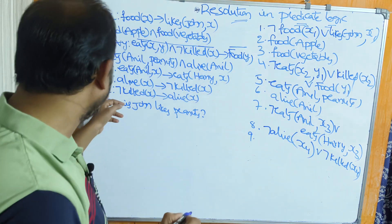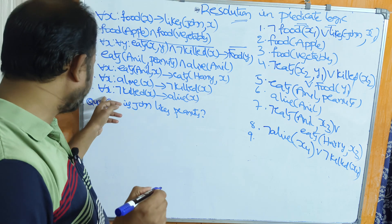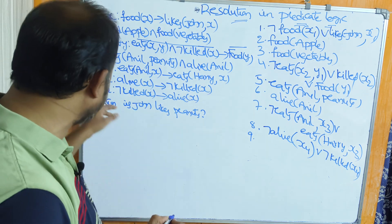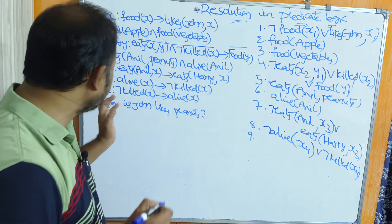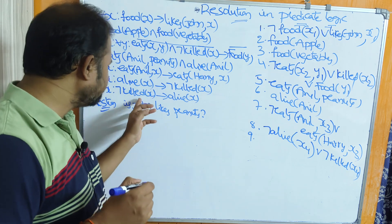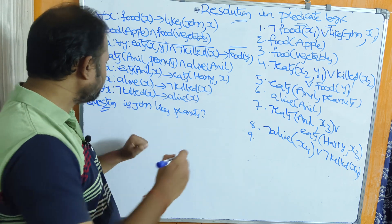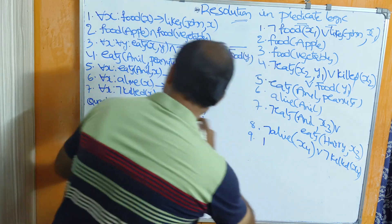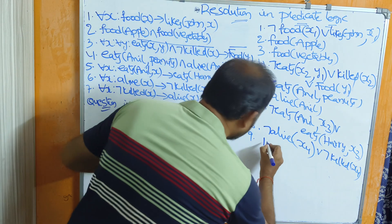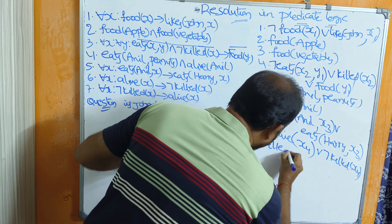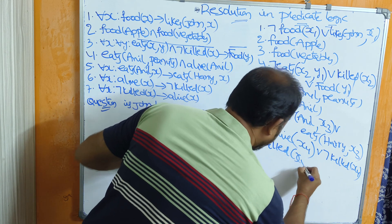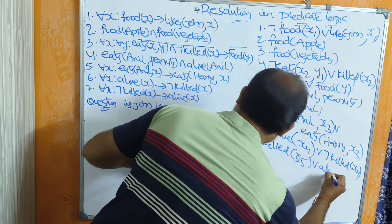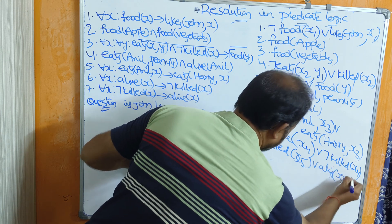Last one: for all x, negation killed(x) implies alive(x). Eliminate the universal quantifier. This is in the form p implies q, so negation(p) or q. Negation of negation eliminates, giving us killed(x5) or alive(x5). All these statements are now in clause form or conjunctive normal form.